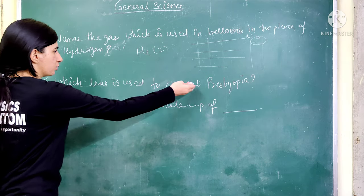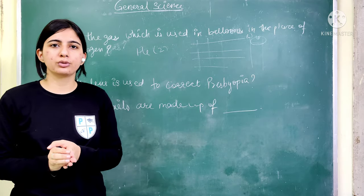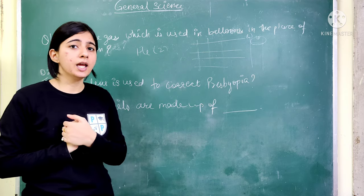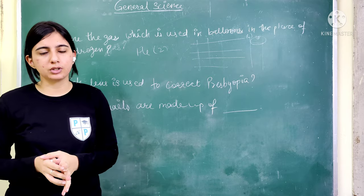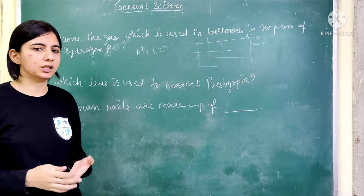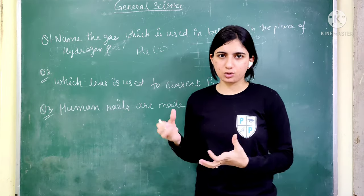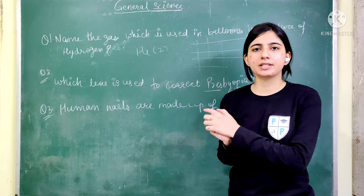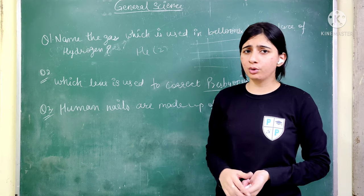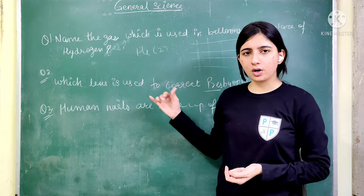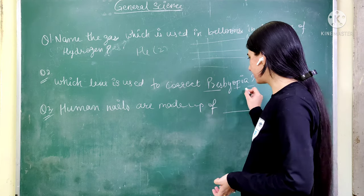Next question: which lens is used to correct presbyopia? Presbyopia is a defect of our eyes in which distant objects are not seen clearly — they appear less visible. This defect is more common in old age due to eye weakness. The answer is bifocal lens, which is used to correct and prevent presbyopia.